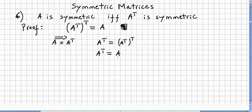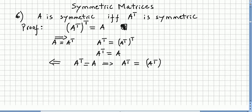Now, if the transpose is symmetric, you can take this in the other direction. So you take A transpose symmetric — that is the same as saying A transpose is equal to A transpose transpose. So A transpose is equal to A. The transpose is symmetric if and only if A is symmetric. That concludes the proof.